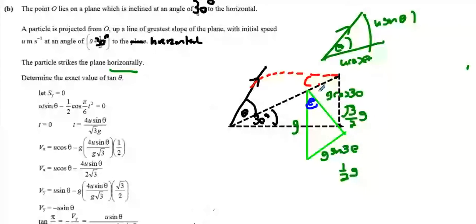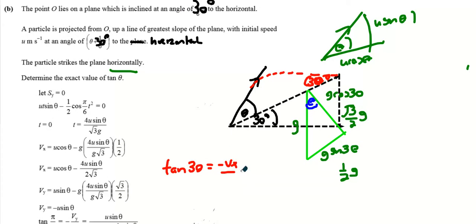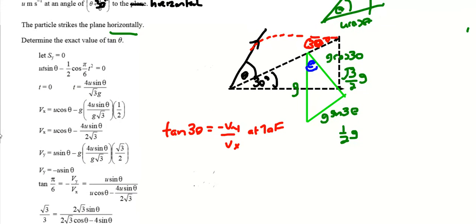The landing angle is 30 degrees because it's the same as the angle of the wedge. So tan 30 = −φy / φx at time of flight. We have to find the time of flight, then find what φx and φy are at the time of flight. That's what we're going to do now — we start making our equations.